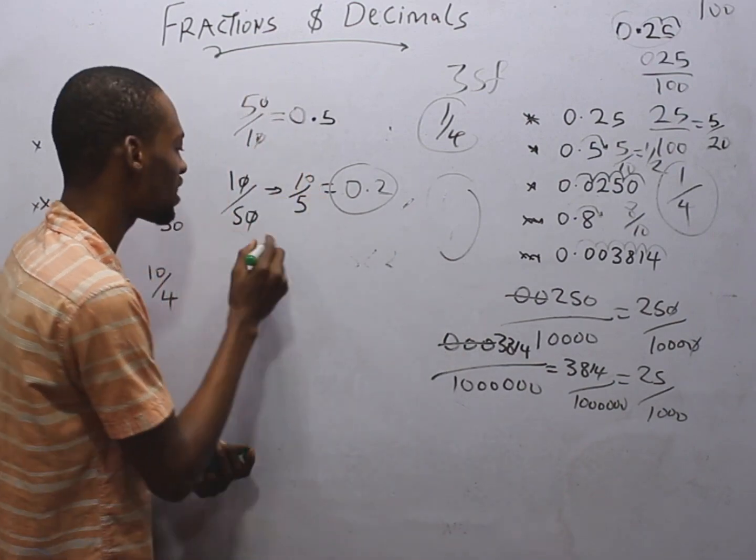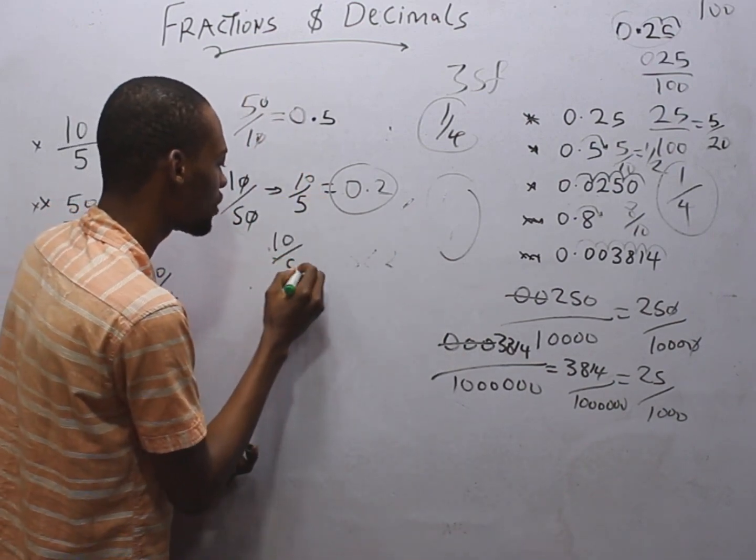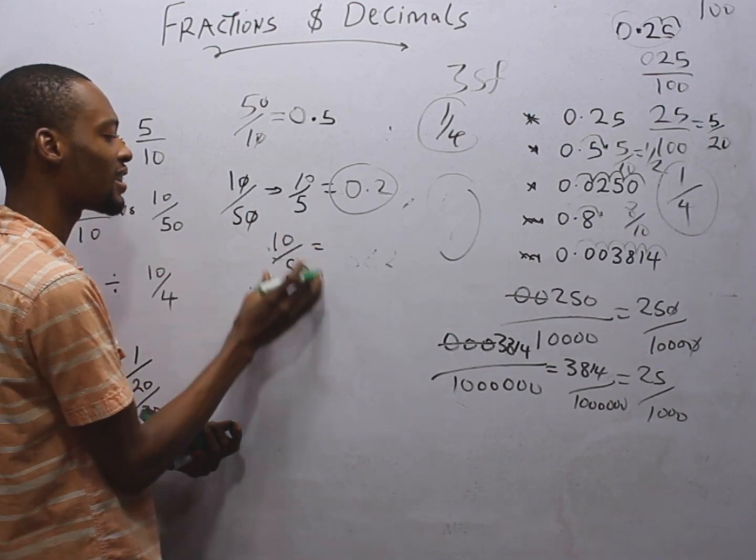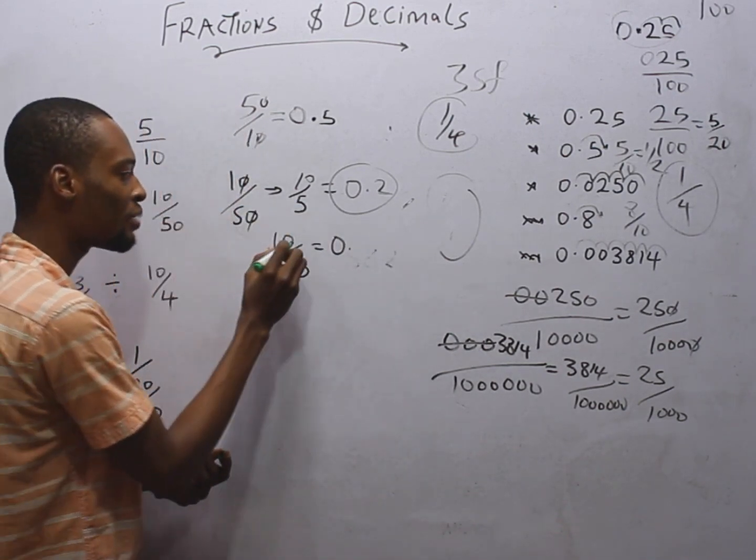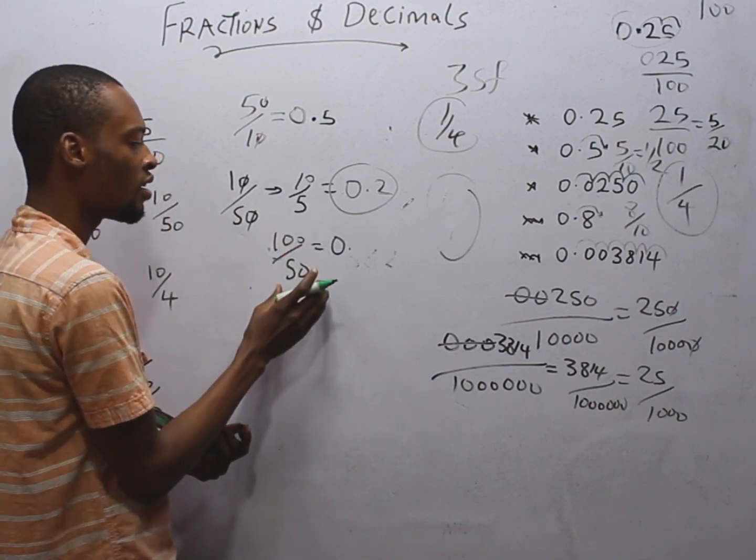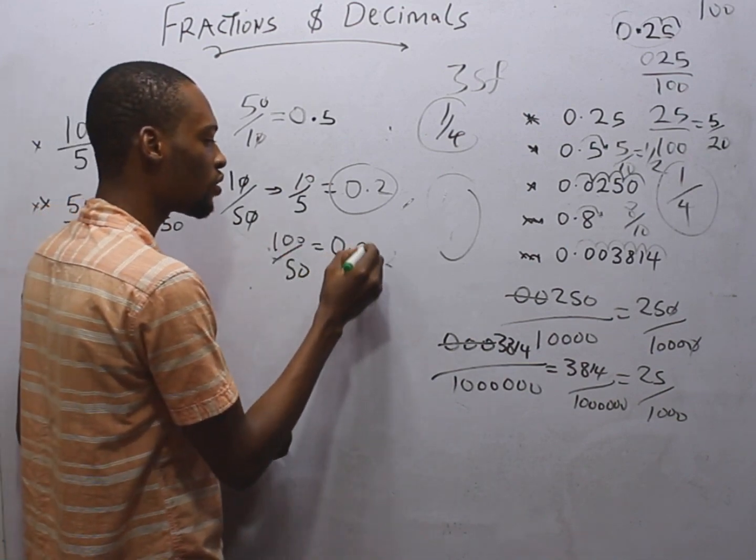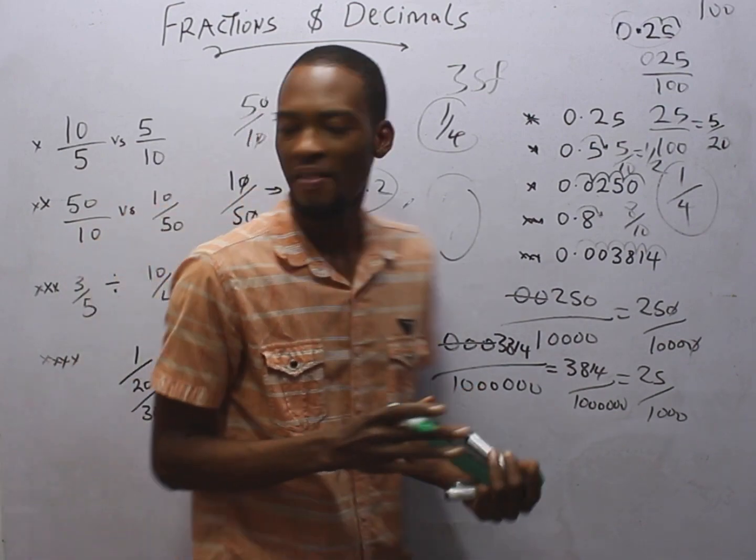So, 10 over 50 is 0.2. If we are doing this direct, it will be 10 divided by 50 equals. 10 is less than 50, so put down 0 point. Add imaginary 0 here to give you 100 divided by 50 equals 2.